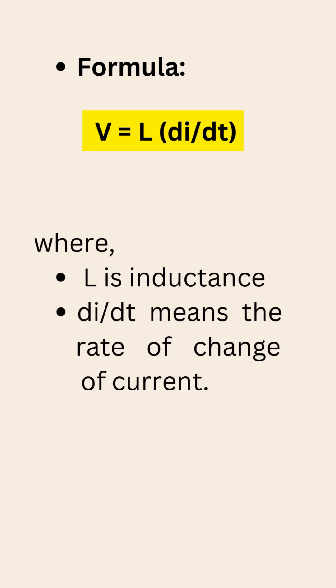The voltage across an inductor is given by V equals L times di/dt. That means the faster the current changes, the bigger the voltage. Where L is inductance, and di/dt means the rate of change of current.